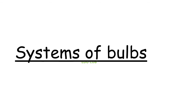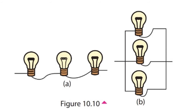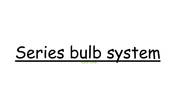Our next topic is systems of bulbs. You can see two bulb systems here. Two simple methods of connecting several bulbs to a circuit are shown in these figures. When the bulbs are connected as in the first diagram, we call this a series connection. When the connection is like the second one, we call this a parallel connection.